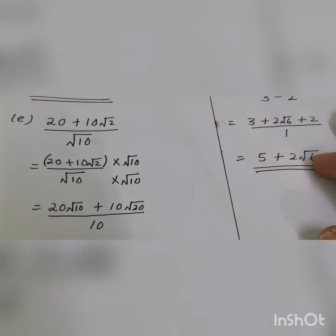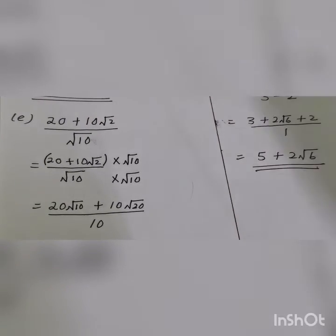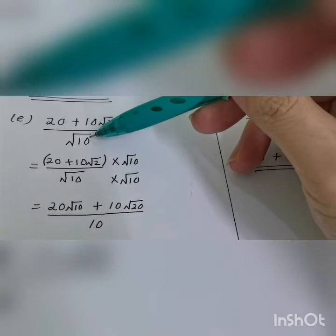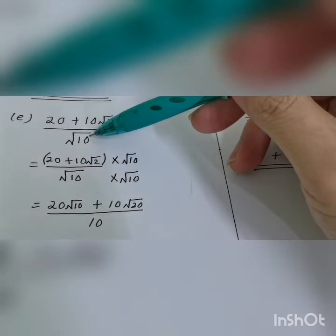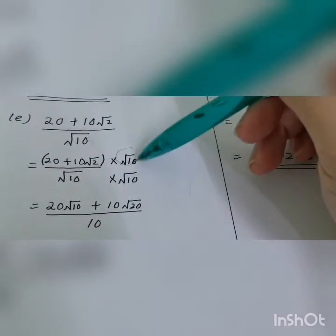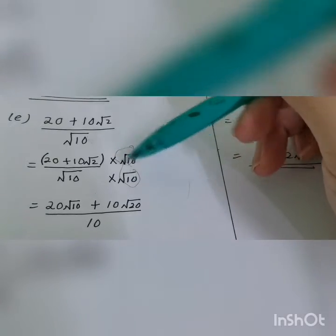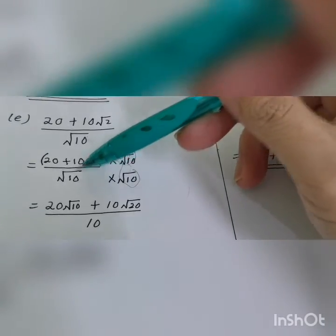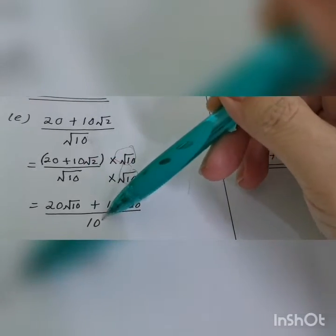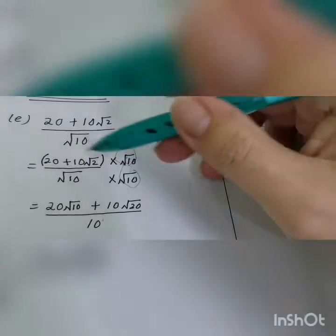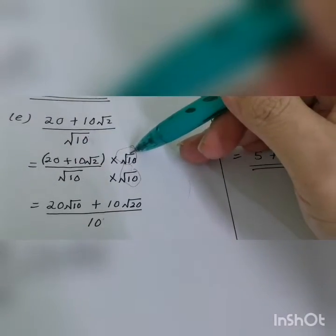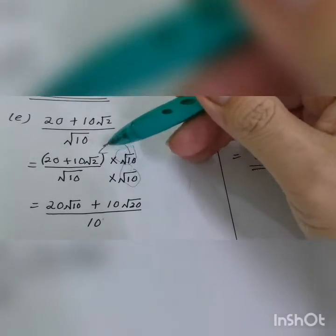For the next example, we need to rationalize. Multiply top and bottom by square root of 10. Square root of 10 times square root of 10 becomes 10 on the bottom.